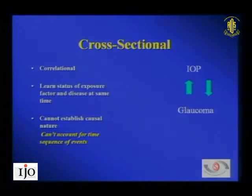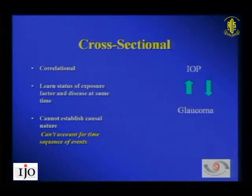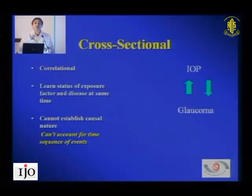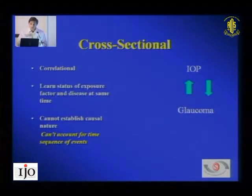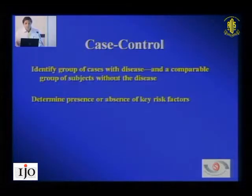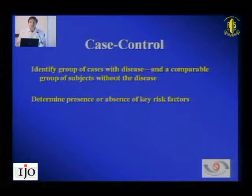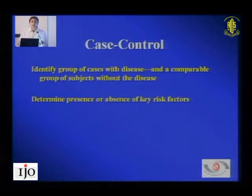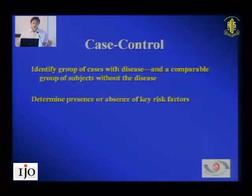Cross-sectional studies do not establish a causal relationship. If out of 100 people, I found 10 with glaucoma — 8 male and 2 female — it doesn't mean that all males have a high risk of developing glaucoma from a cross-sectional study. We can formulate questions based on the data, but it cannot give a cause-and-effect relationship. Case control studies identify a group of cases with disease and a comparable group without disease, and then determine risk factors.